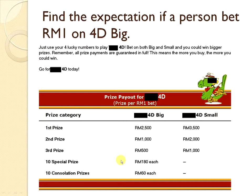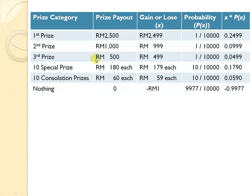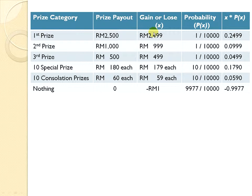For each special prize, you will get RM180. This is the table that I constructed. There is one prize category they didn't show you — you get nothing, and you don't get any money from the company. You will lose RM1, and you will gain RM2,499 if you win the first prize because you bet RM1. You have to deduct what you invested to get the gain. The probability for you to win the first prize is 1 over 10,000, because there are 10,000 combinations for 4D.